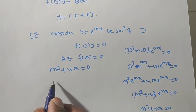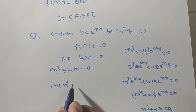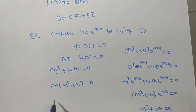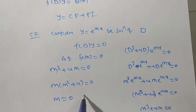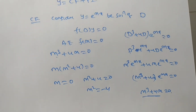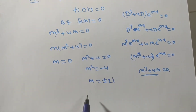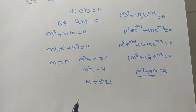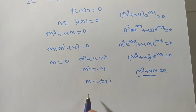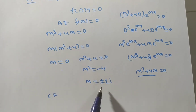To find the complementary function, factor out m: m(m² + 4) = 0. The roots are m = 0 and m² + 4 = 0, giving m² = −4, so m = ±2i. The roots are imaginary, not real.